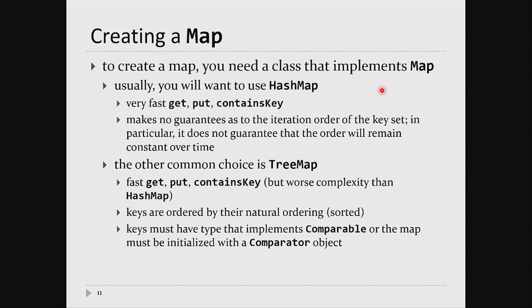To make a map, you pick a class that implements the map interface. Normally you choose a HashMap — if you don't know anything about your problem other than that you need a map, pick HashMap. It's built using something like a hash set. A hash set can do get, add, and contains in O(1) — constant time. So get, put, and containsKey are all O(1) for a HashMap.